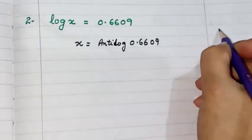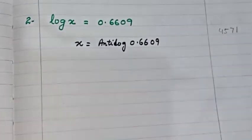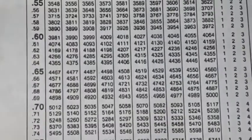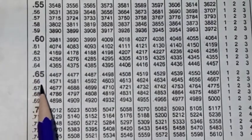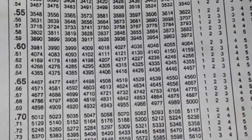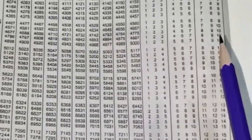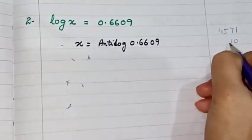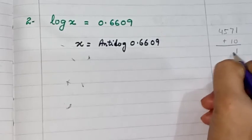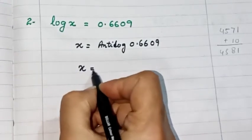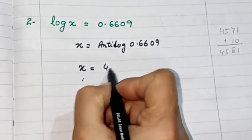We write 4571 in the rough column. Then we go for the digit 9 in the mean difference table. In the same row of 0.66, the mean difference for 9 gives us 10. After adding 10, we get 4581. So we write x equals 4581.